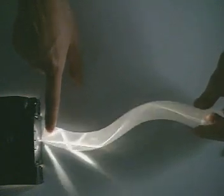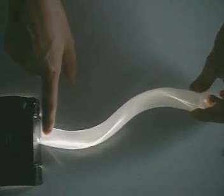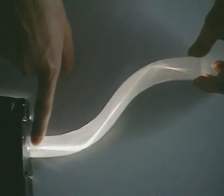At a certain angle, the light stays inside this plastic rod. Total internal reflection allows light to travel through a curved shape.